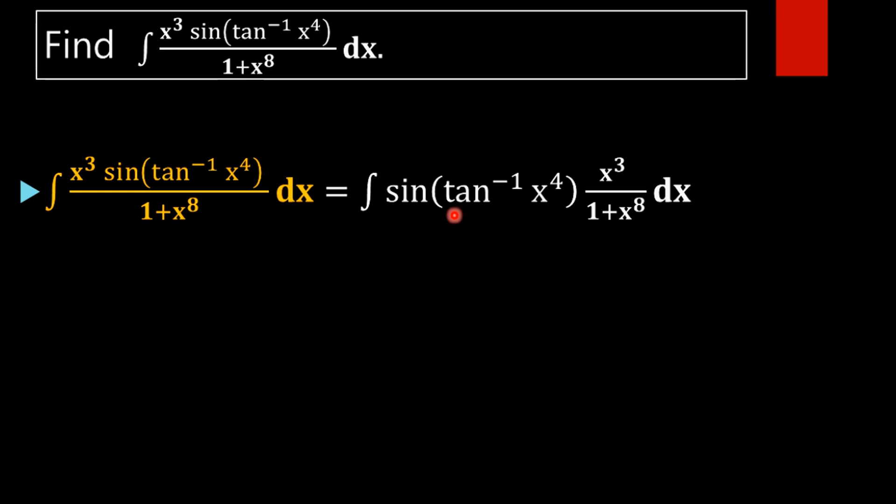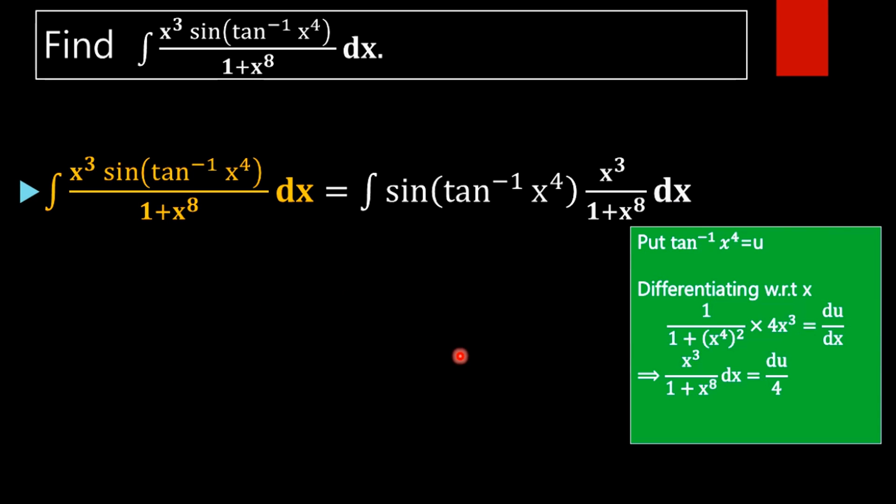So here we are taking tan inverse of x raised to 4 as u. Why we are taking this is because on differentiating with respect to x, we will get 1 by 1 plus x raised to 4 whole square into the derivative of x raised to 4, that is 4x cube, which equals du by dx.